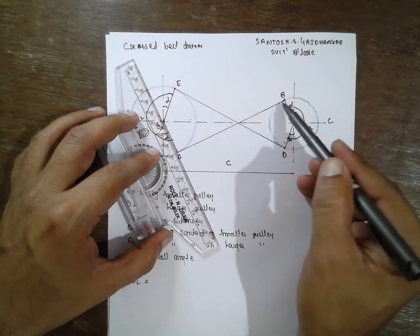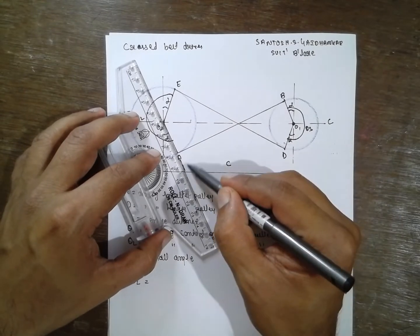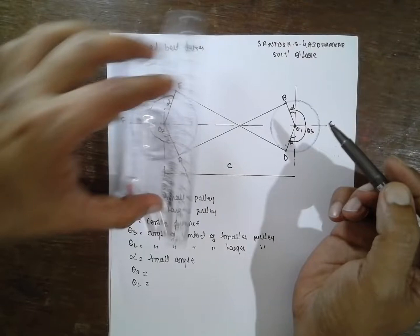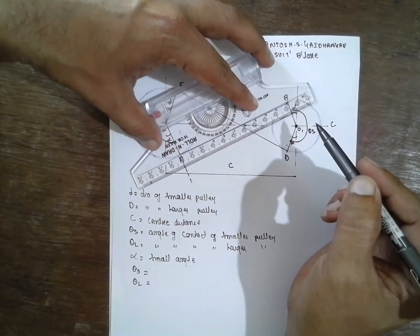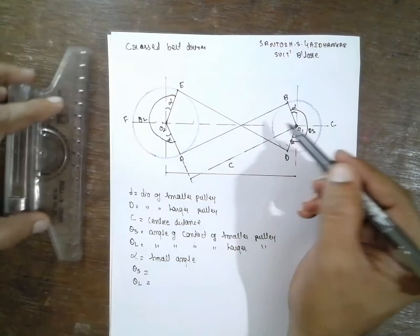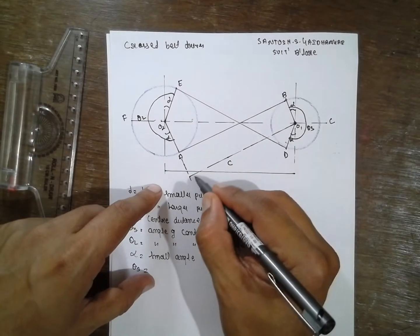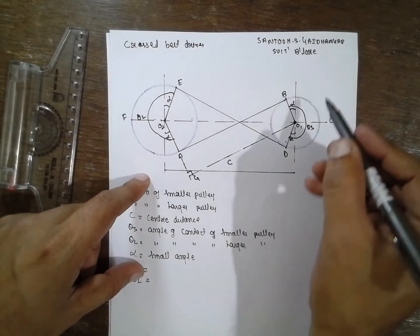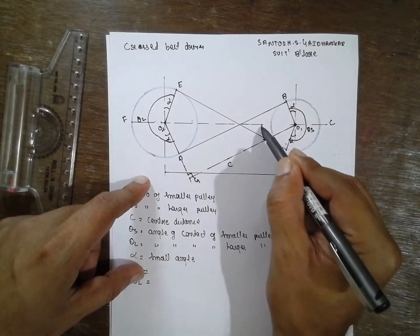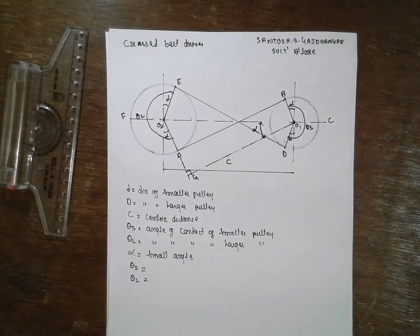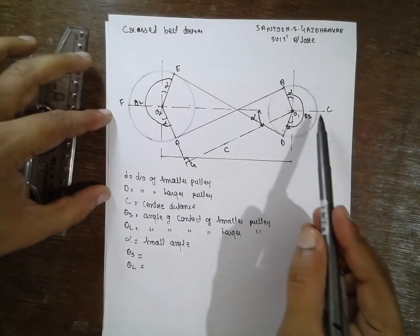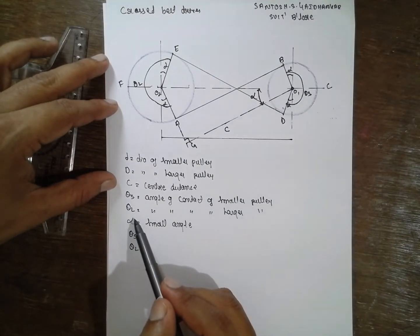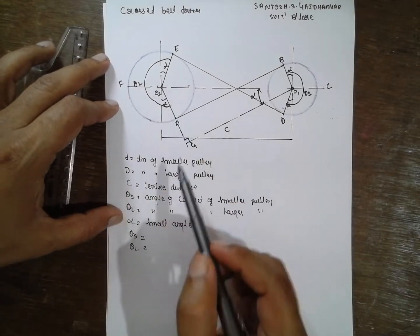Let us consider an exactly parallel line drawn here, parallel to AC. I extend this part here, exactly parallel, and this point I call G, which is at 90 degrees. This is required for the derivation purpose. If this angle is alpha, then this angle also becomes alpha. Here, small d is the diameter of the smaller pulley and capital D is the diameter of the larger pulley. C is the center distance and alpha is the smaller angle.